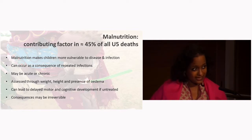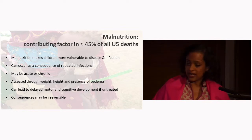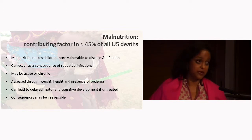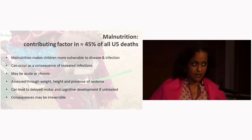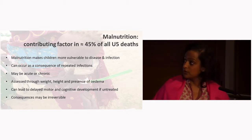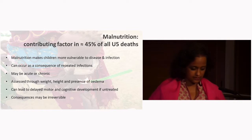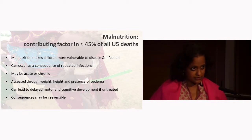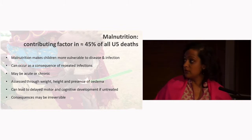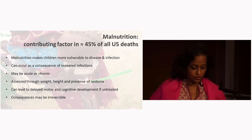Importantly, its effects on development may be irreversible. Acute malnutrition is also called wasting and is defined as low weight for height. It's a strong predictor of mortality in under fives and is generally due to an acute food shortage or disease.